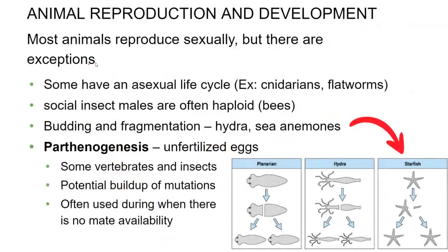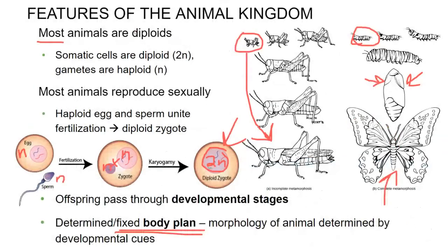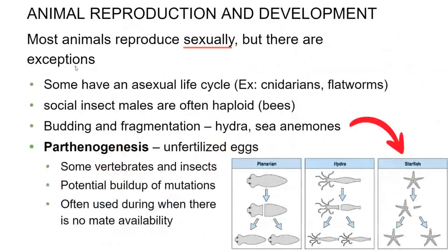The reproduction of most animals is sexual, which is reflective of most animals being diploids. There are some exceptions, though. Many of these animals have a backup life cycle that is asexual — imagine if the environment is stressful or you can't find a mate, you still want to be able to produce offspring asexually. For example, the cnidarian, like this hydra, can reproduce by budding.